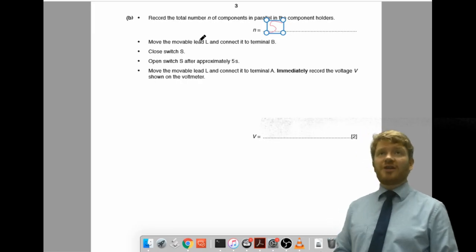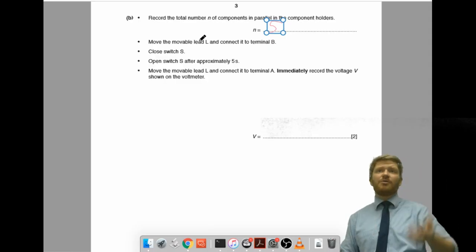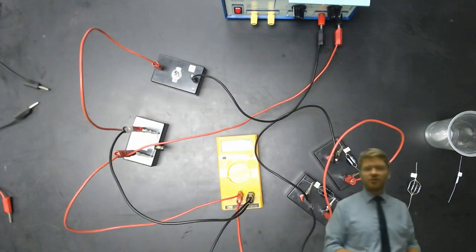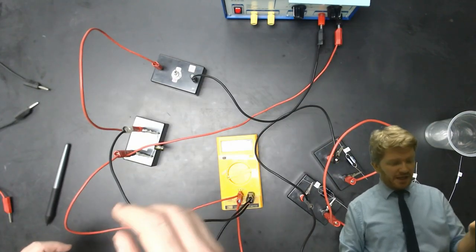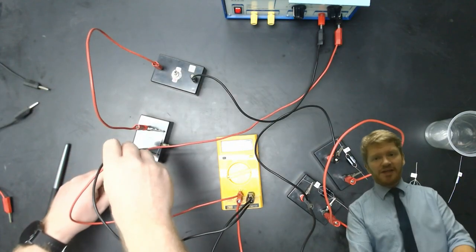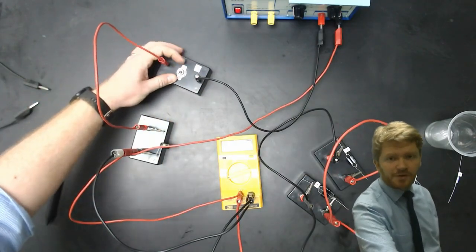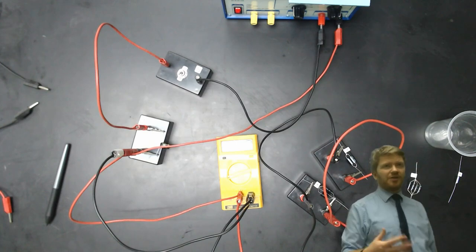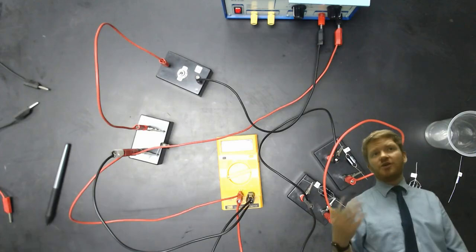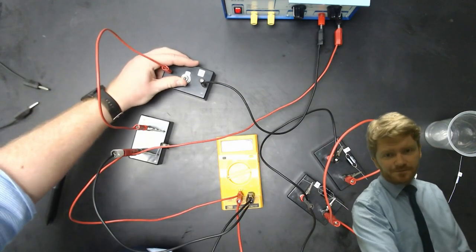And then it says, this is where a lot of people struggled. And I'm going to be totally honest with you. I totally made a hash of this in the real thing last year when I was doing my supervisor results. Well, it is easy, actually. There's no excuse. You just have to do what you're told. So, move the movable lead L and connect it to terminal B. Terminal B is labeled. So, just plug it in. Check it. Then it says close switch S. That means turn it on. Open switch S after approximately 5 seconds. Now, actually, this type of circuit will charge almost instantaneously. You'll learn all about this in year 13. But it doesn't matter. Follow the instructions anyway. Count to about 5 in your head. Then turn it off.